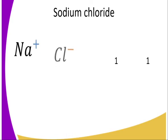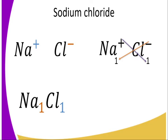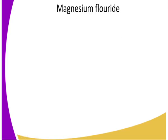So first, identify the ions of the element. Once you identify the ions and the oxidation state, cross-multiply the valencies — that is, you interchange the valencies of sodium and chloride. This gives us: sodium requires one chloride ion, while chloride ion requires one sodium ion to become stable. That gives us the formula NaCl — sodium chloride.